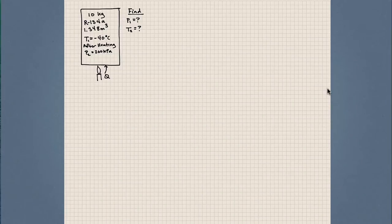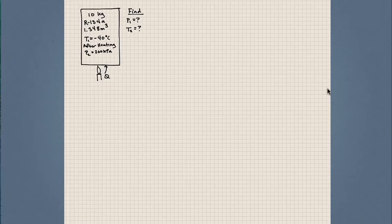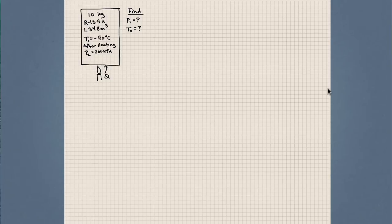In this problem, we're going to be looking for the initial pressure and the final temperature based on some properties that are given. We have a rigid tank that has a mass of 10 kilograms of refrigerant 134A. The volume of this tank is 1.348 meters cubed. The temperature initially starts at minus 40 degrees Celsius. We add some heat and the pressure increases to 200 kilopascals. The objective of this problem is to start practicing using the thermodynamic tables.